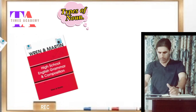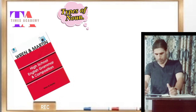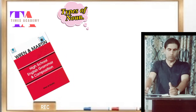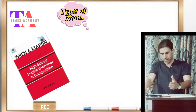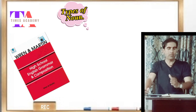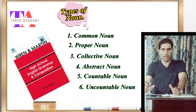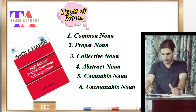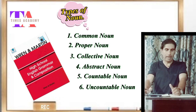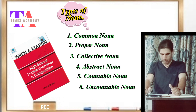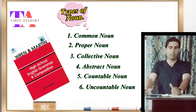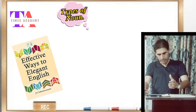The next source is High School English Grammar and Composition written by Ren and Martin, where the noun has been classified into six important categories: number one, common noun; number two, proper noun; number three, collective noun; number four, abstract noun; number five, countable noun; and number six, uncountable noun.